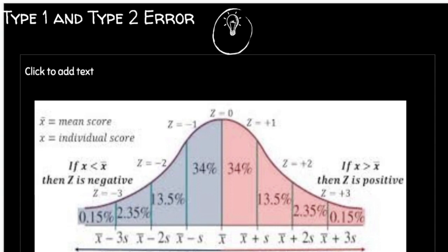We divide by the standard deviation to put every point on one common scale. Think of it like a circle: if you divide a circle in half, each half is still part of that same whole circle. Similarly, when you divide by the standard deviation, every resulting value is a part of — or falls within — your standard deviation.